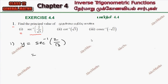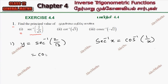There is a formula: sec inverse x is also equal to cos inverse 1 by x. So, this becomes cos inverse root 3 by 2. That means cos inverse y is equal to root 3 by 2, so cos y equals root 3 by 2.